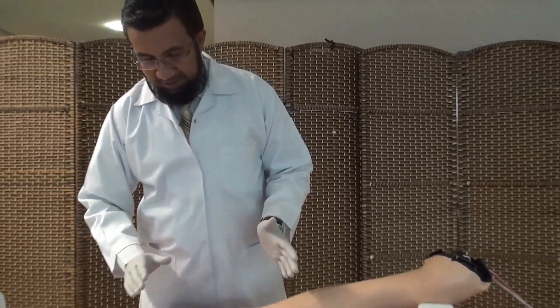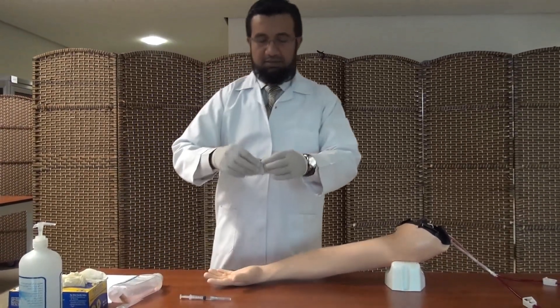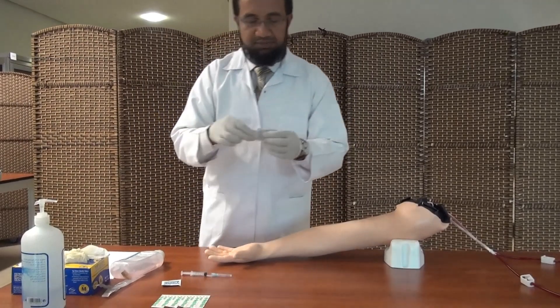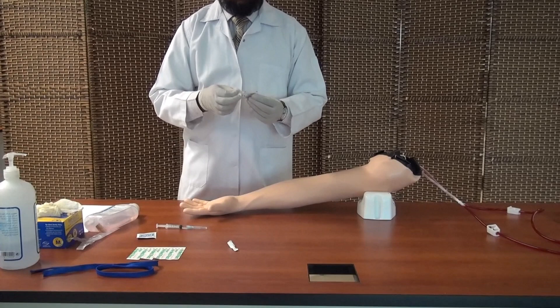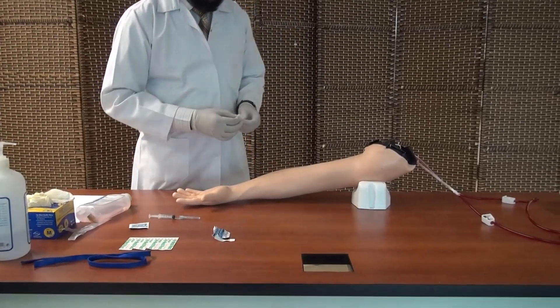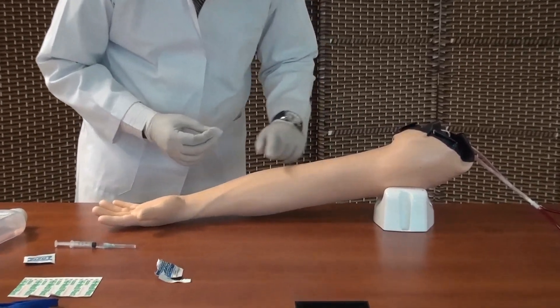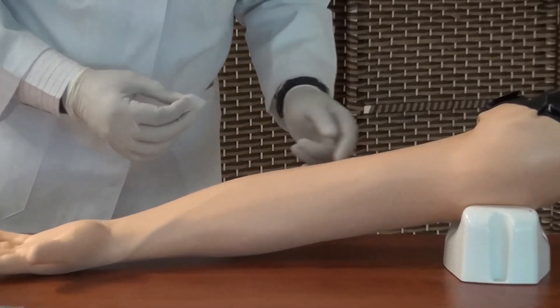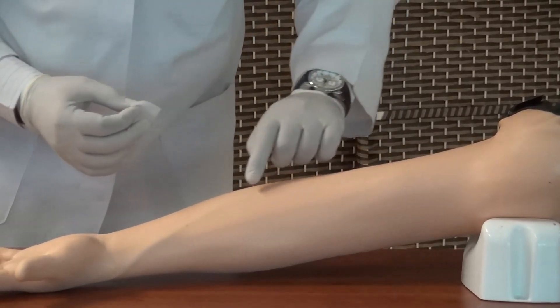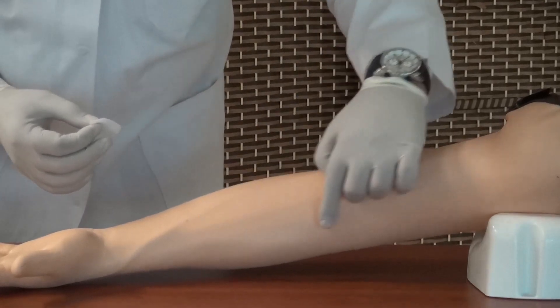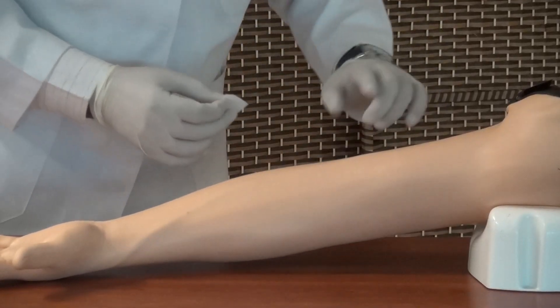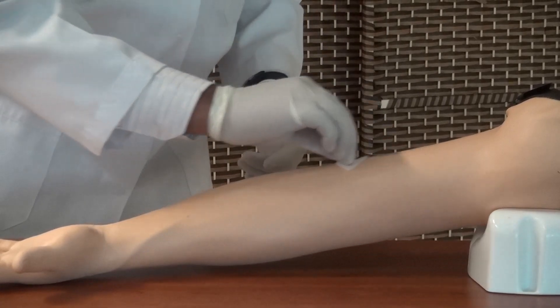Now once we are done, take out one of the alcohol swabs and then try to identify which area you would like to start with. Now we have a few veins pretty visible, one is here, another one here, another one here. For example, if I prefer this vein.